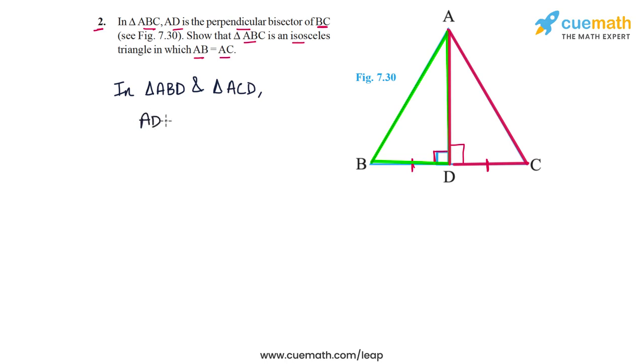Clearly, AD is common to both of these triangles, so AD is equal to AD—common. Also, angle ADB, which is this angle, is equal to angle ADC, which is this angle. Why is that?